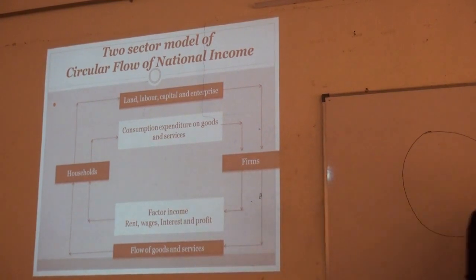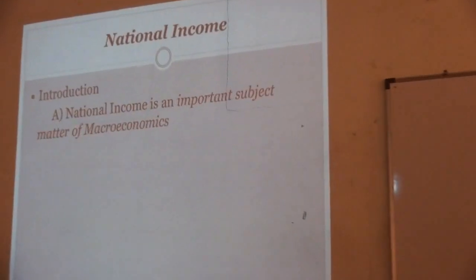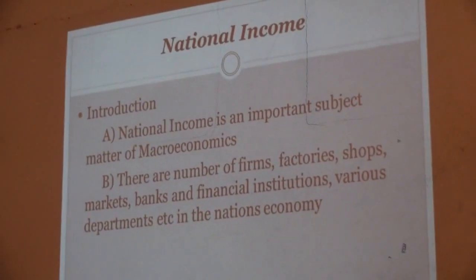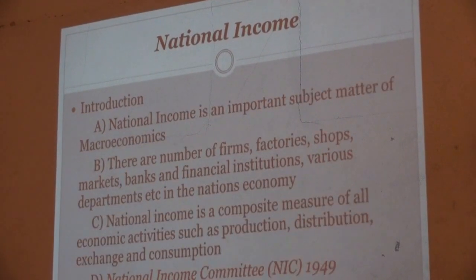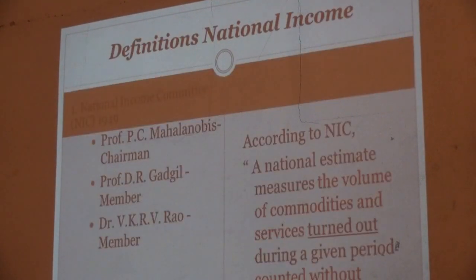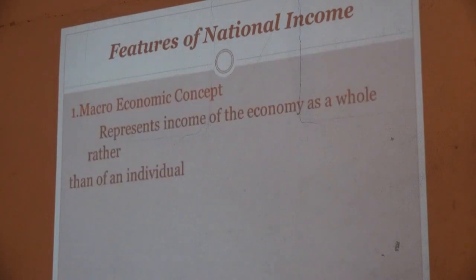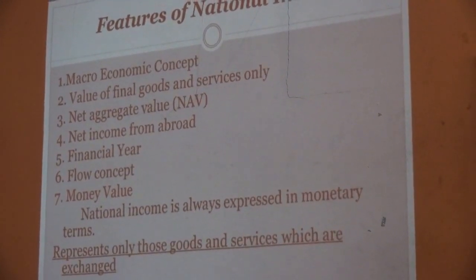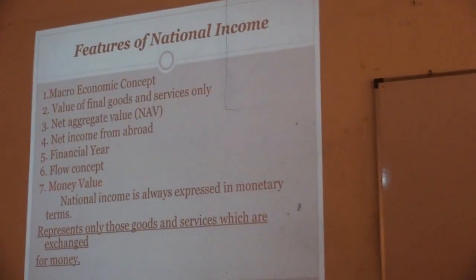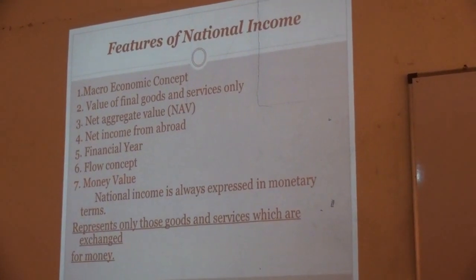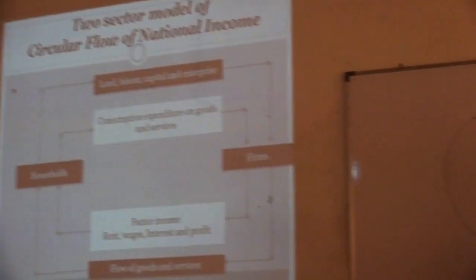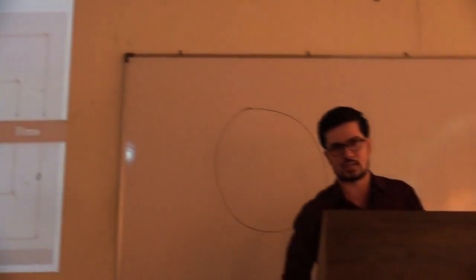In summary, in this lecture we have discussed: the meaning of national income as an important subject matter of macroeconomics; all goods and services produced in the economy constitute national income; three definitions by the National Income Committee, A.C. Pigou, and Irving Fisher; seven features of national income — macroeconomic concept, value of final goods and services, net aggregate value, net income from abroad, financial year, flow concept, and money value; and the circular flow of national income. In the next lecture, we will start with the next point. Thank you.